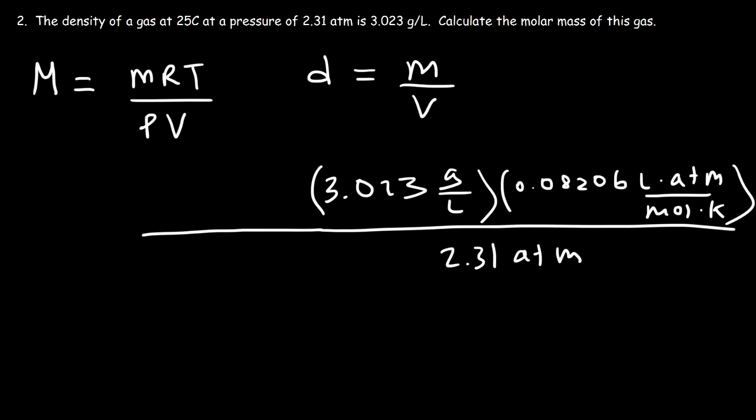And I need to put the temperature on top, which is 25 Celsius, but adding 273 to it, it becomes 298 Kelvin. So this will give us the molar mass.